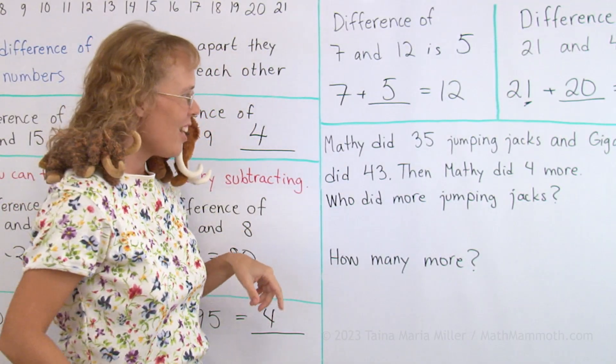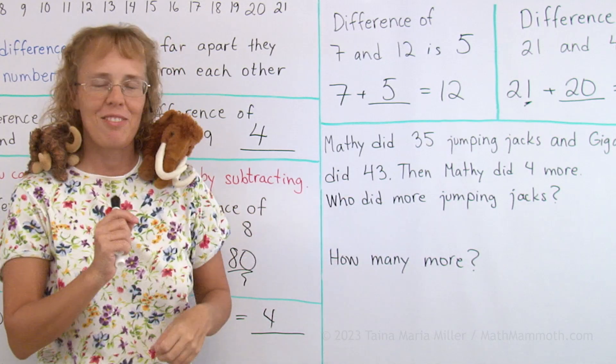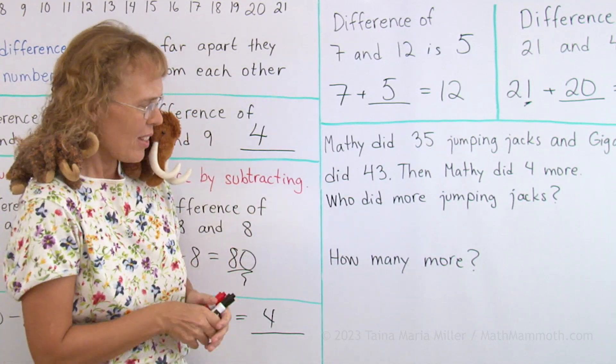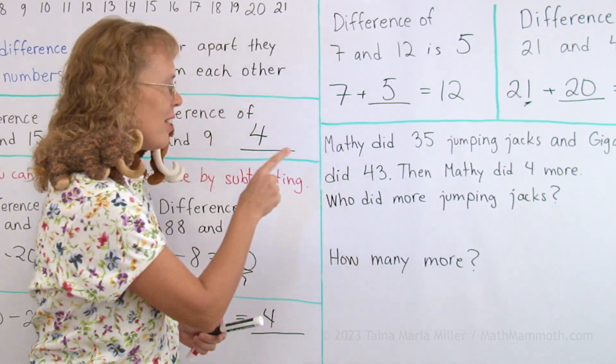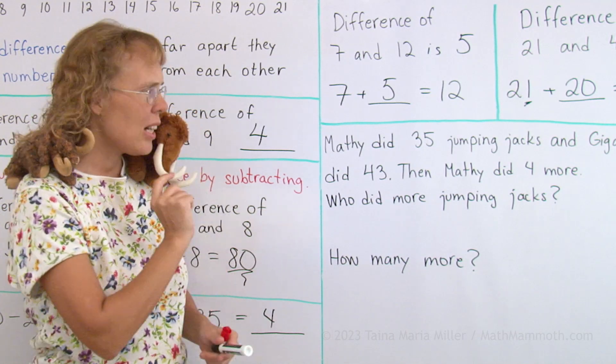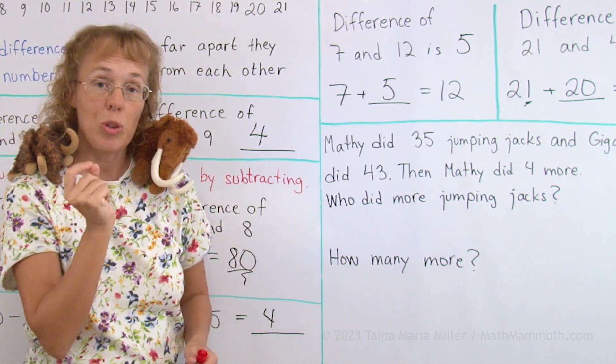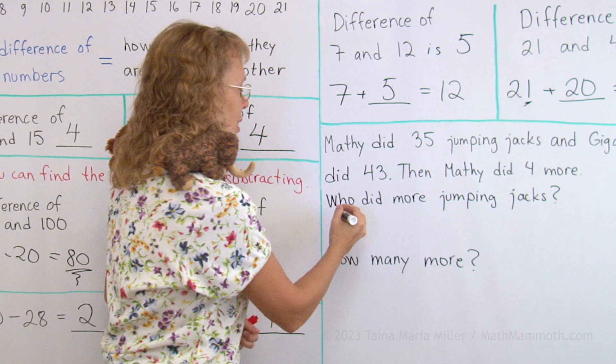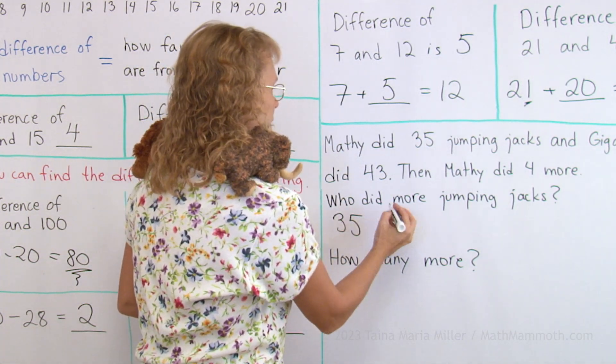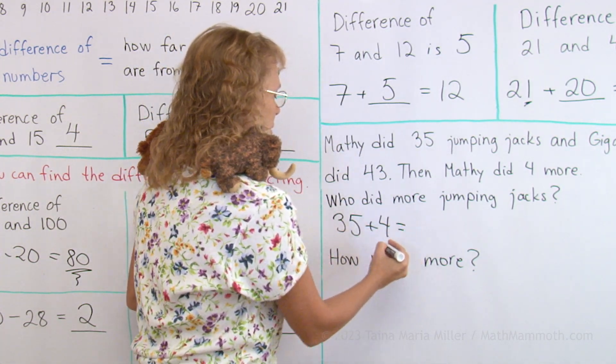So Mathie did 35, Giganto did 43, and then Mathie did 4 more. You were trying to catch up, right? How many did Mathie do then? How many jumping jacks did Mathie do? He did 35, and then he did 4 more. So let's solve that.